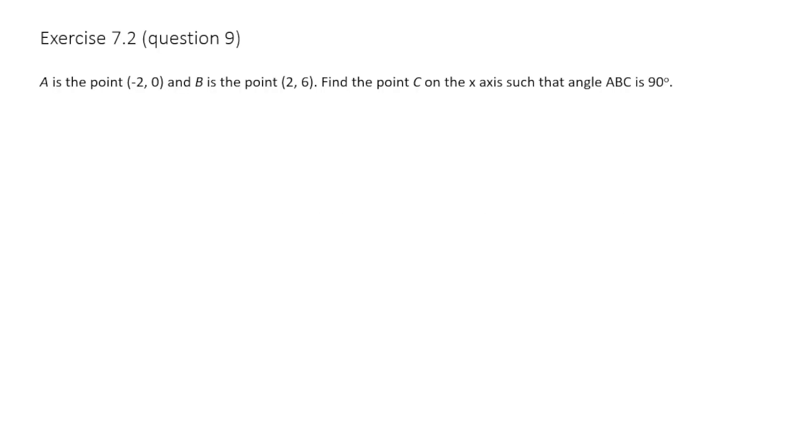A is the point negative two zero and B is the point two six. Find the point C on the x axis such that the angle ABC is 90 degrees.